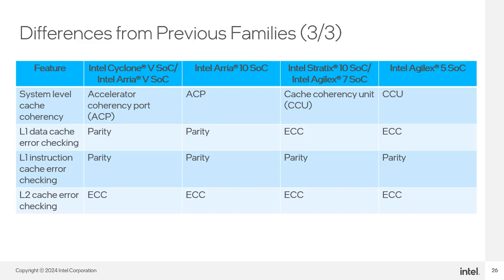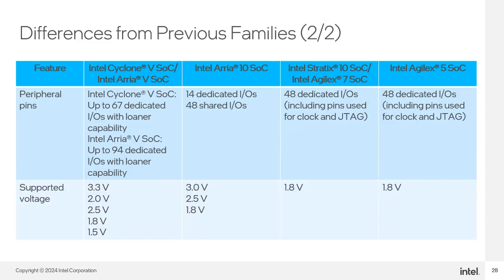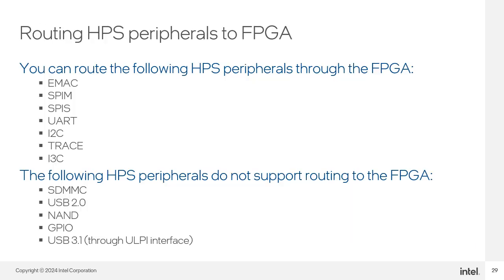The ECC controller generates interrupts upon occurrences of single and double-bit errors, and the interrupt signals are connected to the system manager. Each dedicated I/O has only one function and cannot be used for other purposes; these pins are only accessible by the HPS and not to logic in the FPGA. Shared I/Os can be used by either the HPS or the FPGA, used by high-speed peripherals such as Ethernet MAC and USB. Slow-speed peripherals can be routed through the FPGA fabric and assigned to FPGA I/O, making optimal use of available I/O pins.